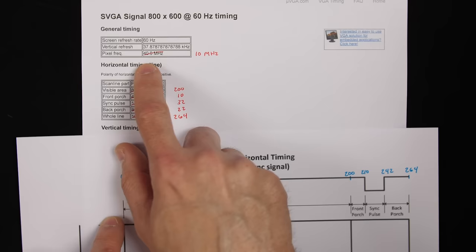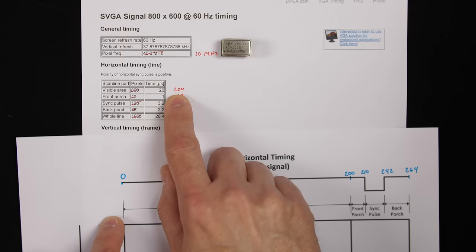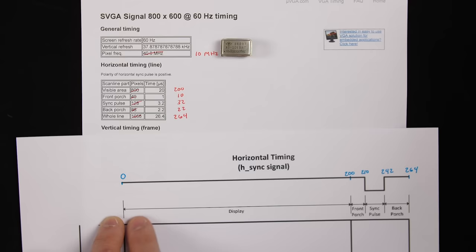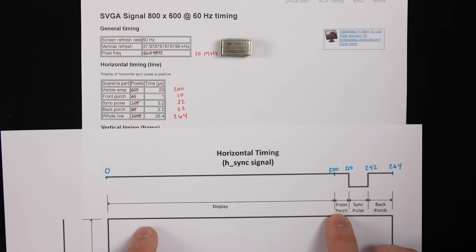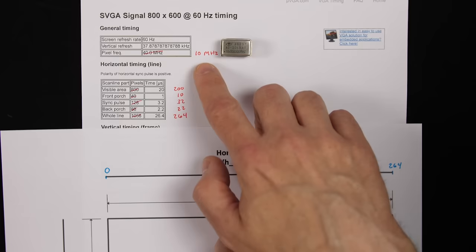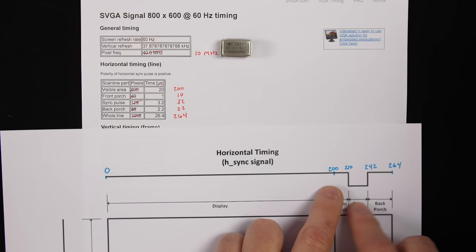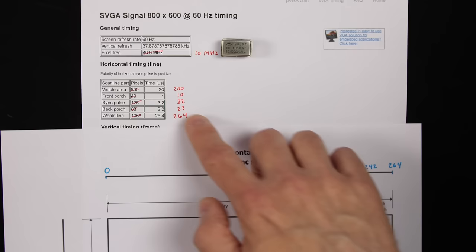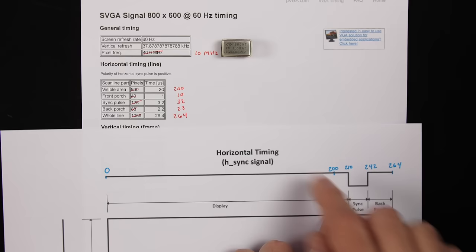The 20 microseconds it takes to draw the visible area of one scan line is based on 800 pixels divided by 40 million pixels per second. But if instead we use a 10 megahertz clock, then 200 pixels divided by 10 million pixels per second is still 20 microseconds — so the timing still works out. The same applies to the front porch, sync pulse, and back porch. For example, 10 pixels divided by 10 million pixels per second is 1 microsecond, giving the right front porch time. And 32 pixel times divided by 10 million per second is exactly 3.2 microseconds for the sync pulse.